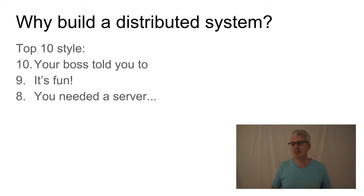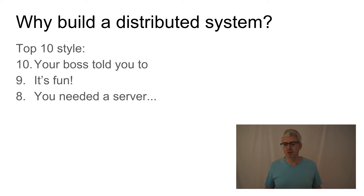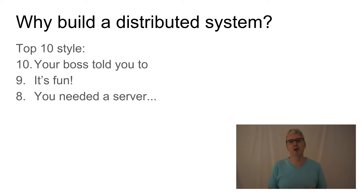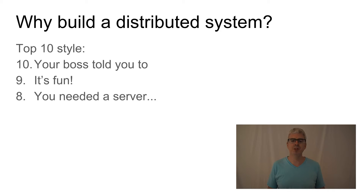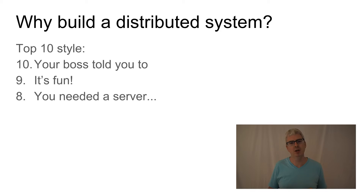Reason number eight: you need a server anyway. You might be solving a problem which can't be solved with a single machine. For example, you need a client-server architecture — you have a customer database with sensitive information that needs to be on a secure server, while customers run a client on their end-user machines. You don't want to ship the entire customer database to every customer's machine, so you need a client-server architecture, but that doesn't necessarily mean you need a distributed system.